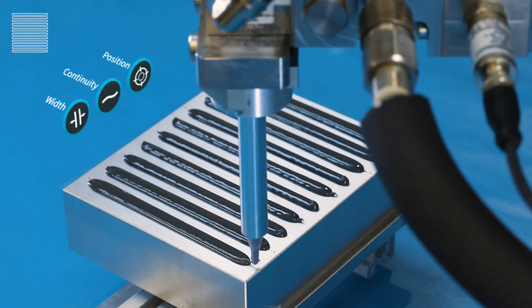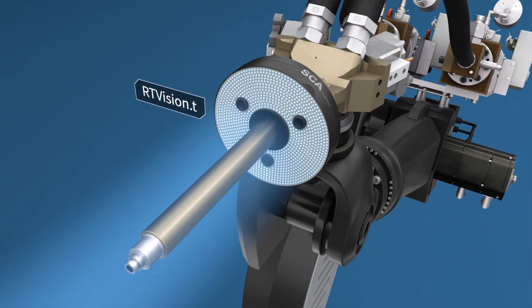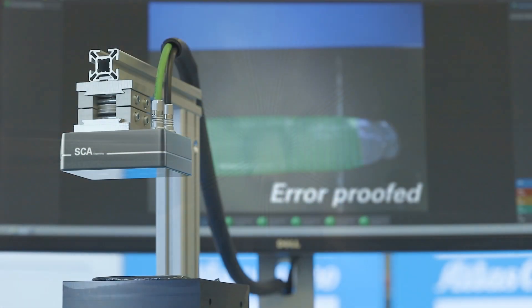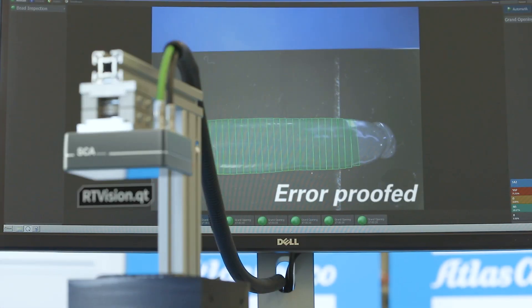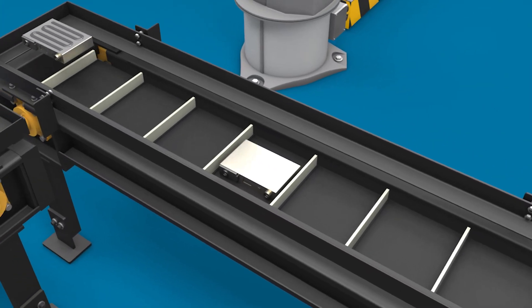The quality inspector RT-Vision-T performs 100% real-time inspection of position, width and continuity of the bead. The RT-Vision-Q-T does single bead inspections on critical spots, inline or offline.